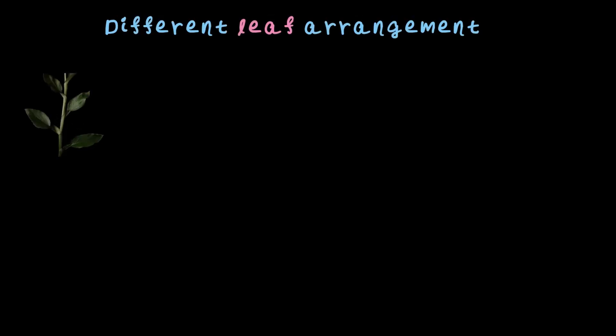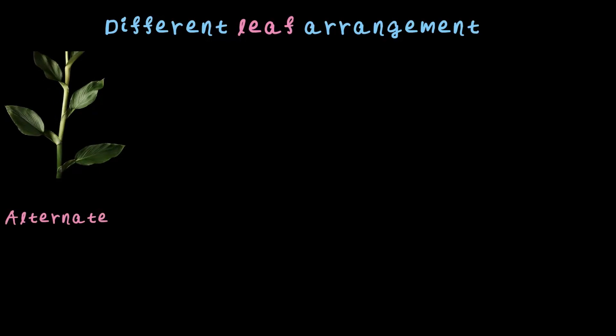Now we have looked at the parts of a leaf and different types of leaves. Let's see how these leaves are arranged on a stem. There are a few different patterns or different leaf arrangements and they are pretty interesting. The first one is called alternate leaf arrangement, and as the name suggests, the leaves are arranged alternatively one after the other along the stem. Examples of these plants are like sunflower, rose, and mustard.